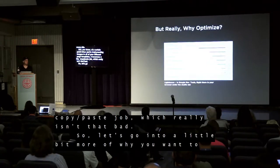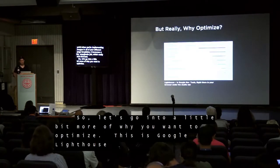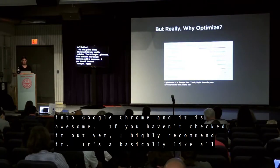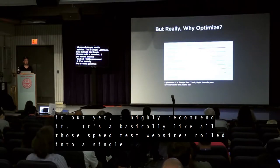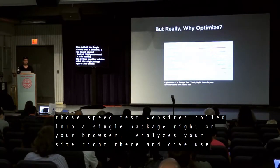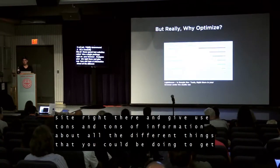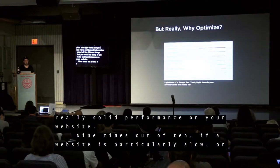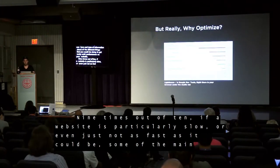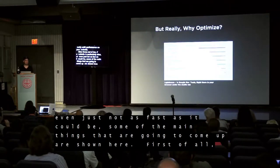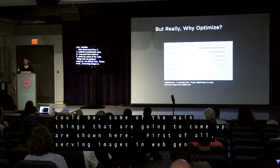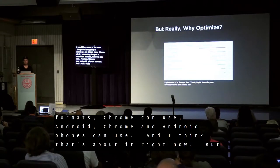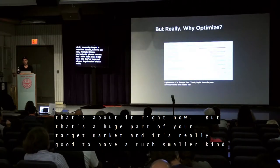Let's go into a bit more about why you really want to optimize. This is Google Lighthouse — a tool now built into Google Chrome, and it is awesome. If you haven't checked it out, I highly recommend it. It's basically like all those speed test websites rolled into a single package right there in your browser, analyzing your site and giving you tons of information about all the different things you could do to get really solid performance. Nine times out of ten, if a website is slow, some of the main things that come up include serving images in next-gen formats — basically serving things in WebP, which Chrome and Android browsers can use — giving you a much smaller image size for those people who can use it.